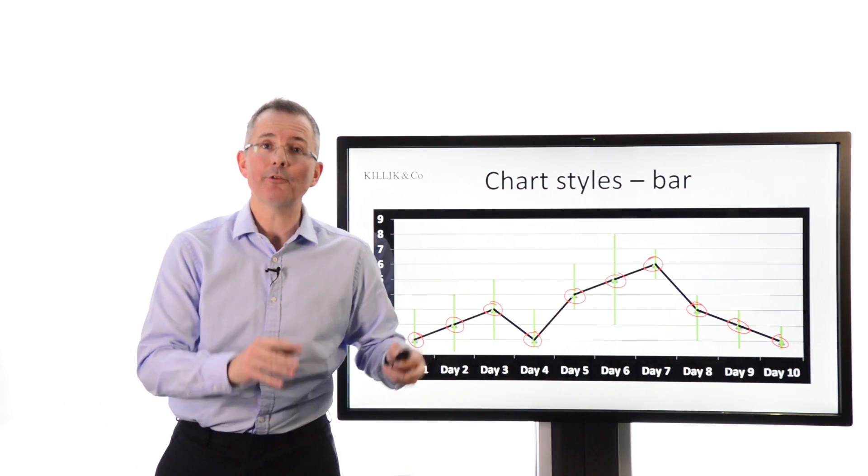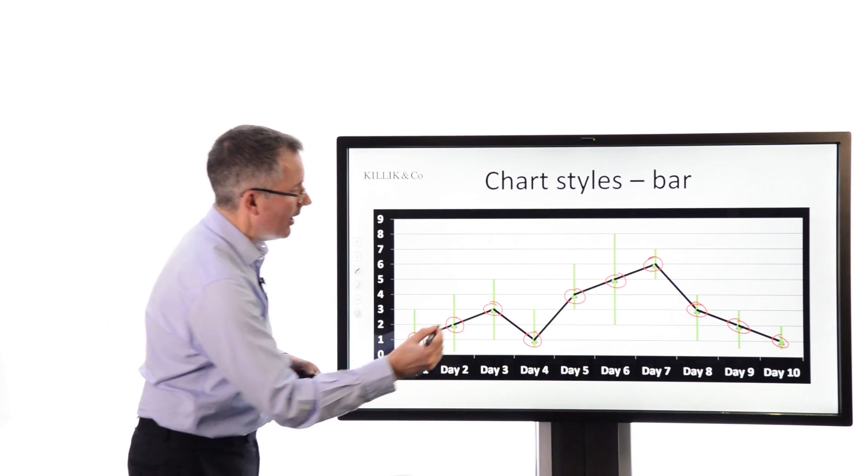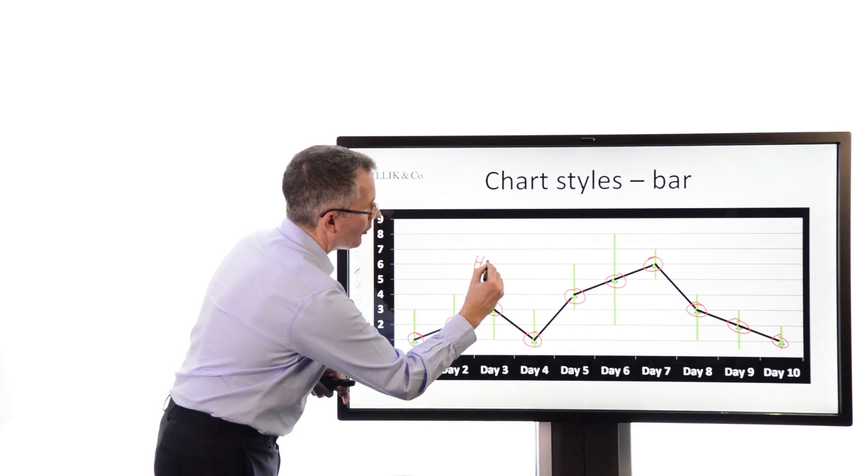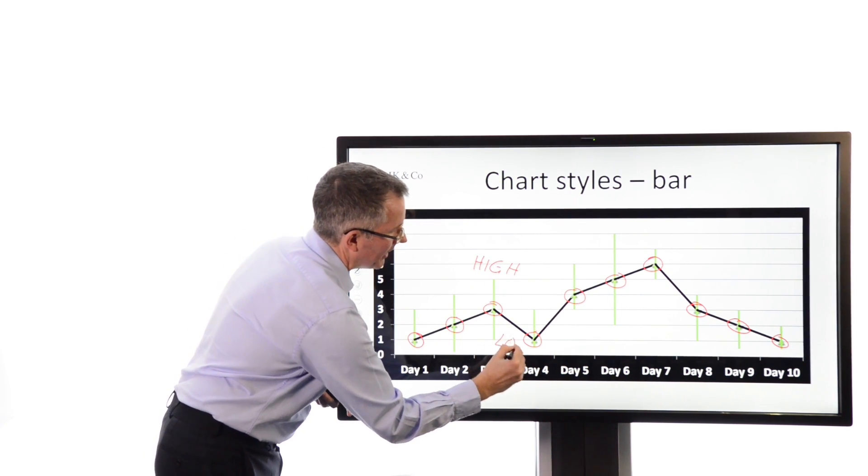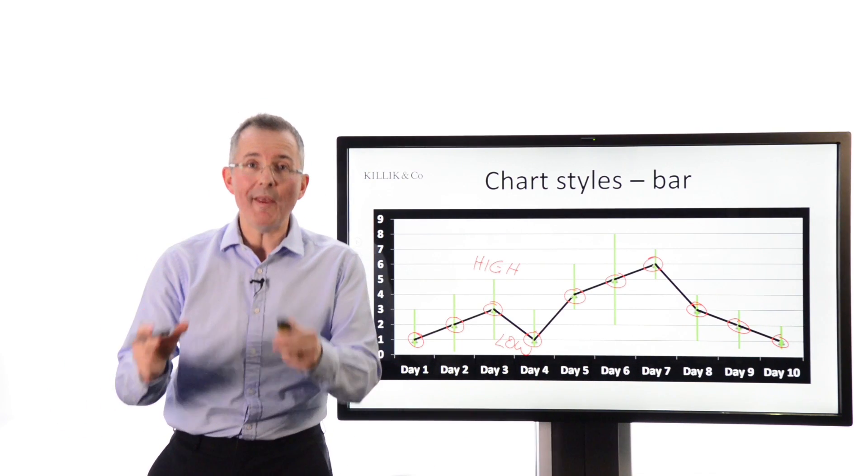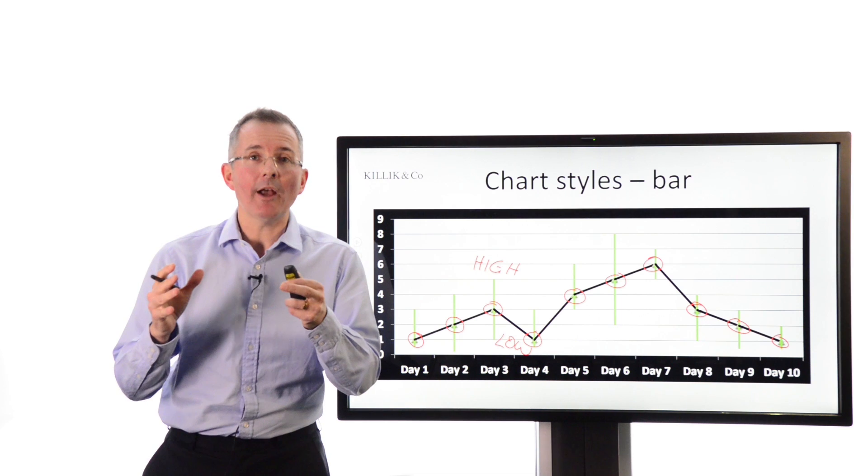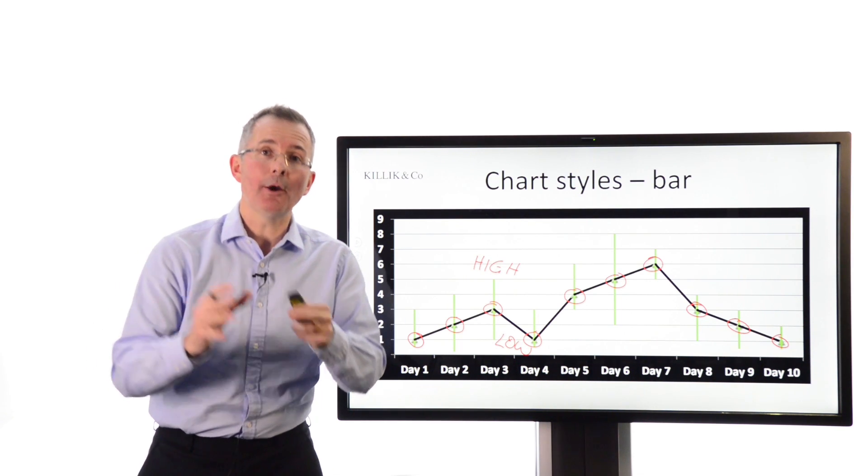The previous chart was based on closing prices for each day. But what we've managed to add in is a bit of extra data here. These bars represent, if I pick one of them, the top of the bar represents the high, and the bottom of the bar, in each case, represents the low within that trading session. And I've defined a trading session as a day.